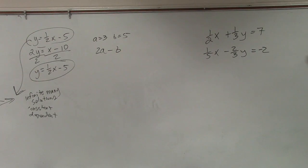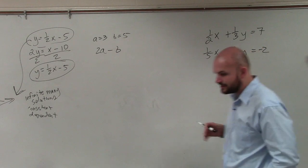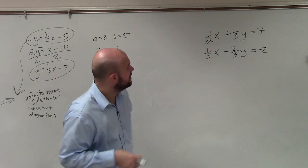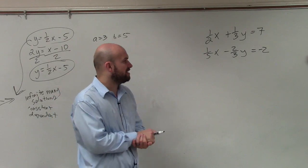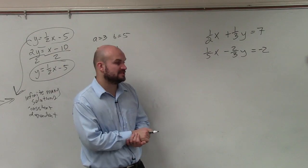Nick, sit down. All right, so ladies and gentlemen, here we have a system of equations. One-half x plus one-third y equals 7, and one-fifth x minus two-thirds y equals negative 2.